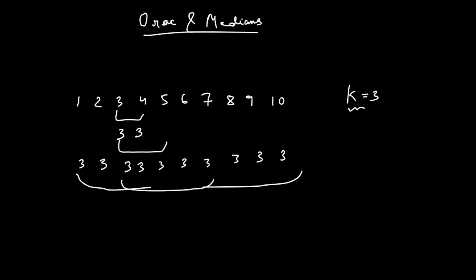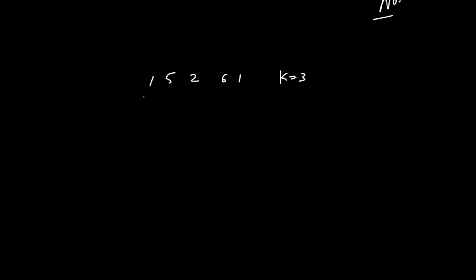If it is possible to make everyone as k, print yes; if not, print no. In the test case where the array is one, five, two, six, one and k is three, the answer is no because the element three doesn't exist in the array, and if it doesn't exist, no matter what range you choose, you can never make any index equal to k.